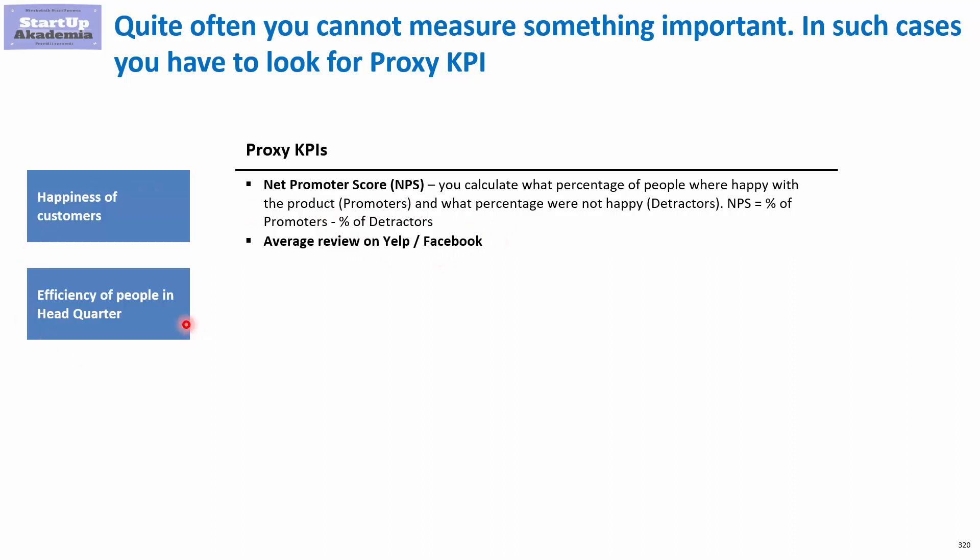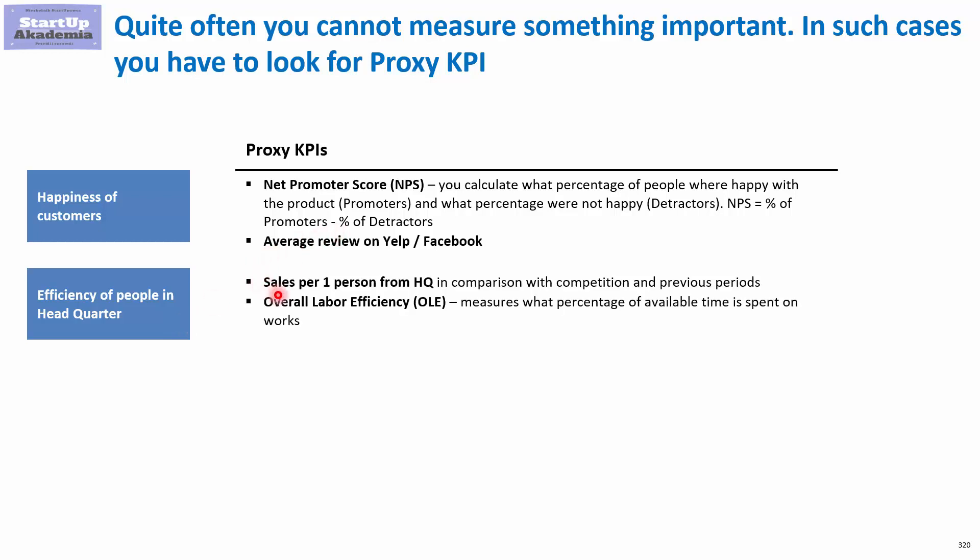When it comes to efficiency of people in headquarters, this is something which is measurable but it's difficult to do because there are different processes and you cannot actually estimate how people are performing or what they are doing each and every day. There's hardly any reporting into that — it's not like production or sales. Therefore, quite often you look at KPIs that are somehow trying to estimate that, so you could look for example at the sales per one person from headquarters and compare it with competitors.